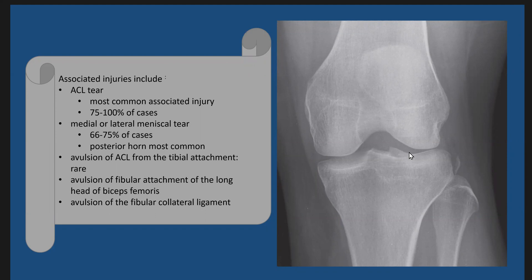It is also associated with medial or lateral meniscal injury in about 66 to 75 percent of cases, mainly the posterior aspect of the lateral or medial meniscus — the posterior horn. Sometimes it is also associated with an ACL avulsion fracture at the tibial attachment, or an avulsion fracture of the fibular attachment of the long head of the biceps femoris.